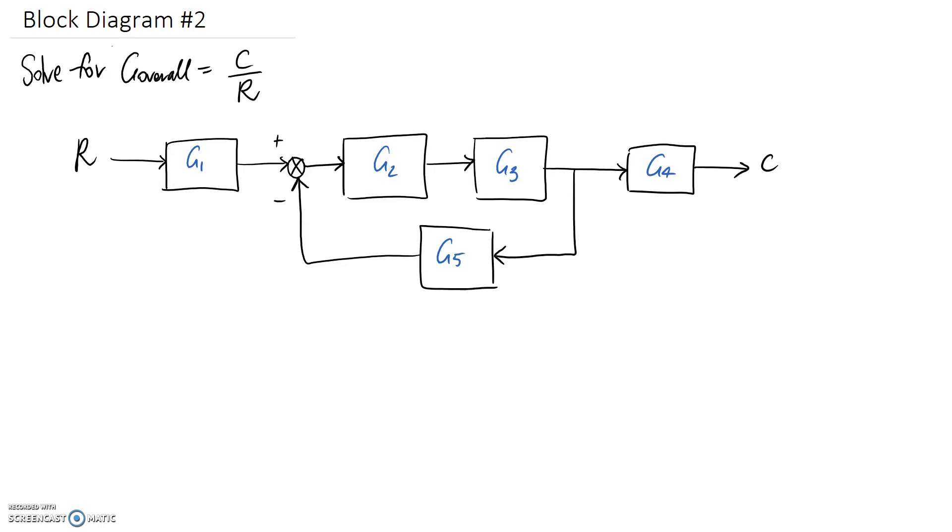So for this question we're going to try and find the transfer function g overall and that's equal to the output of the whole diagram which is c divided by the input which is r. We're going to write ourselves an equation that describes what's going on as we move from left to right across the diagram and then we should be able to rearrange that algebra to get c on r.